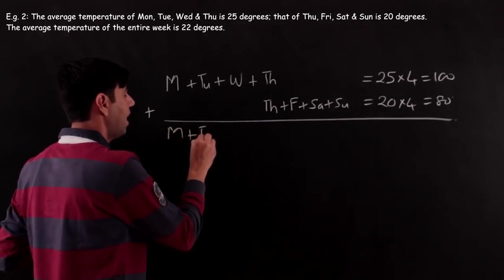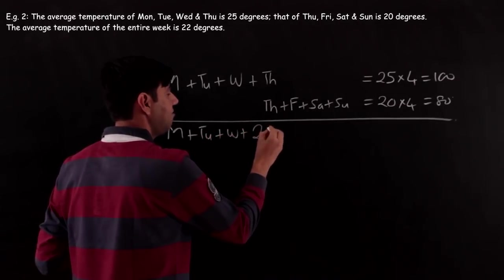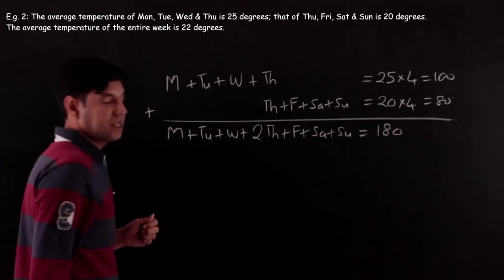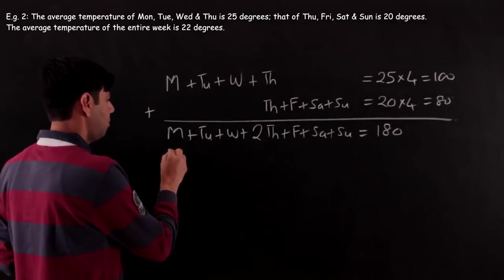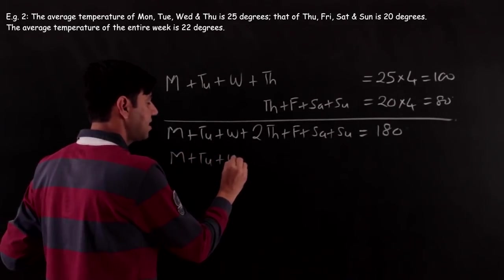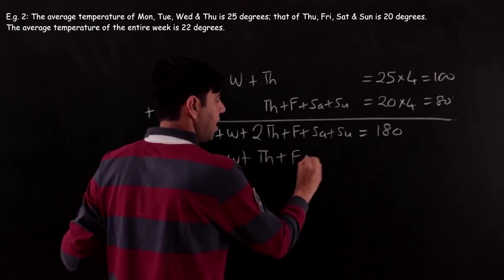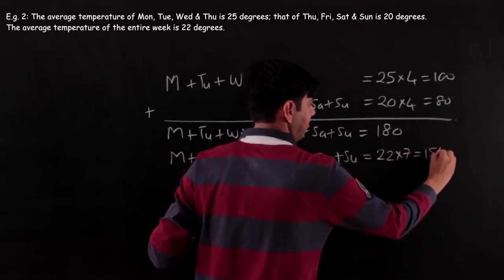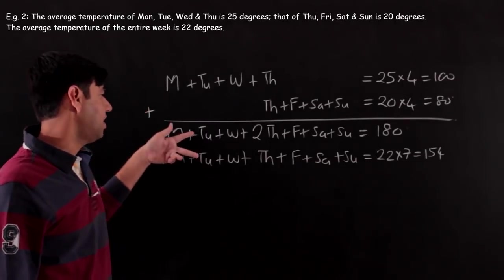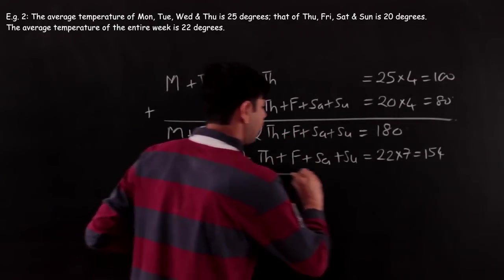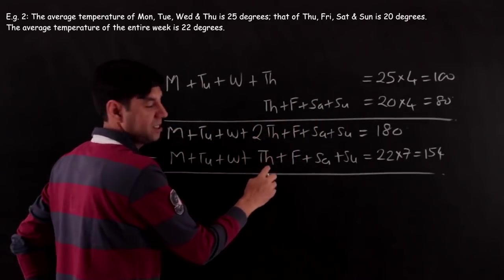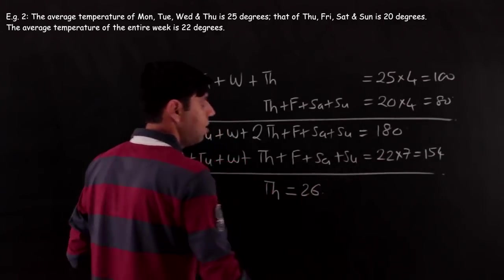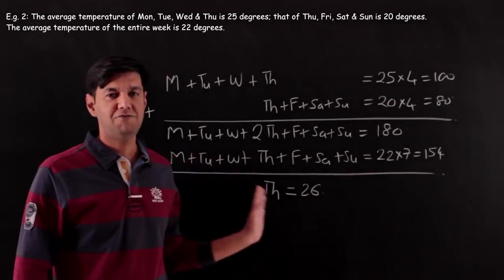Notice that Thursday appears in both sets. When we add the two sums (100 + 80 = 180), Thursday is counted twice. The entire week has 7 days with average 22, so the sum = 22 × 7 = 154. Subtracting: 180 − 154 = 26. The extra 26 comes from Thursday being counted twice, so the temperature on Thursday is 26 degrees.